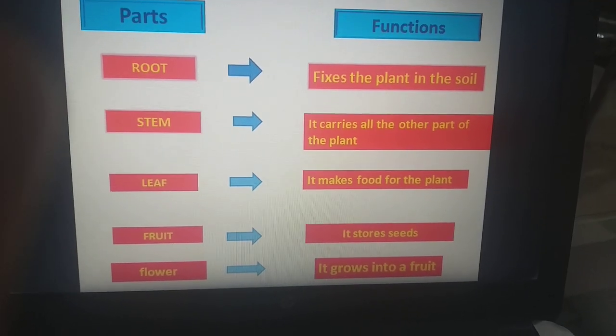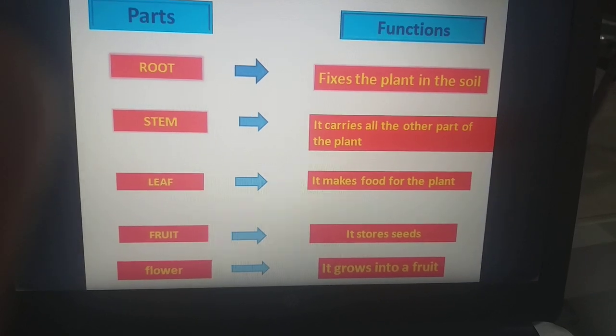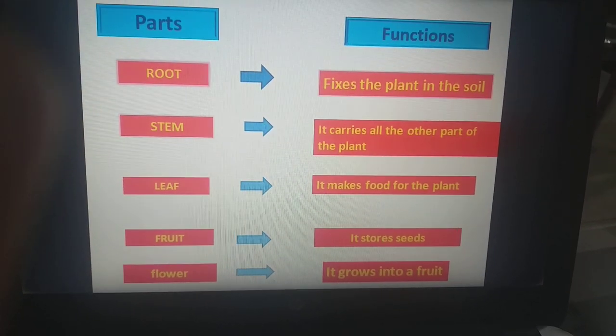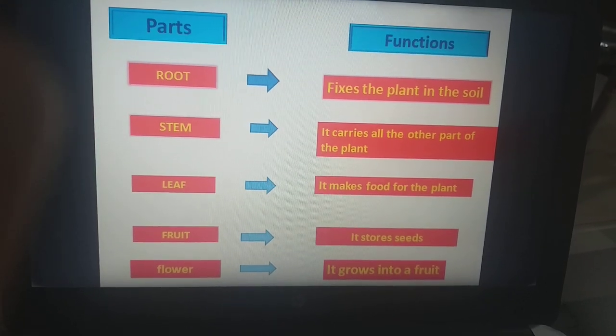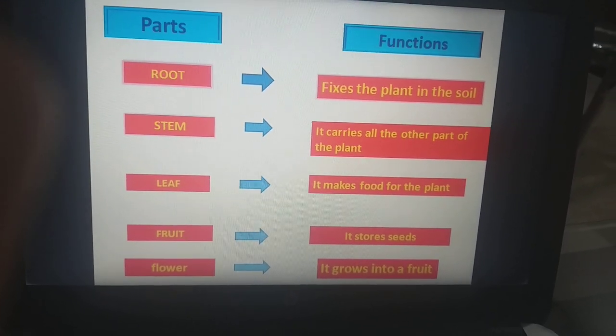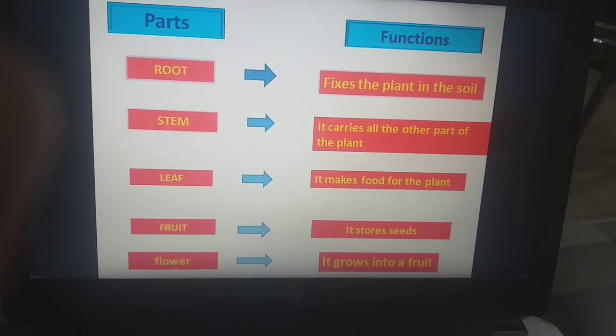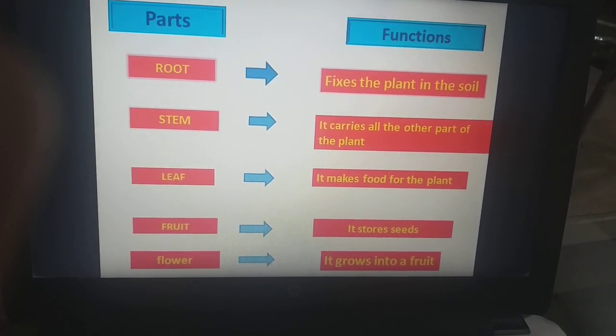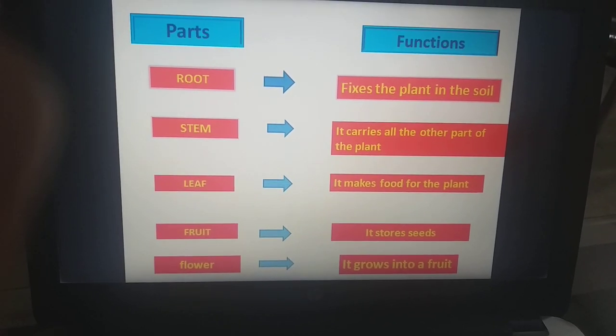Now next part is fruit. What is the function of fruit? Fruit stores seeds. Look children. You eat apple, mango, oranges and throw the seeds. And these seeds grow into new plants. So fruits are very important because it stores seeds and seeds grow into new plants.